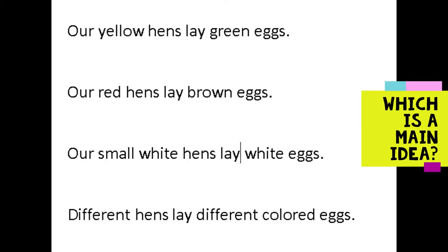So let's end today with a little practice. Here are four statements — which one would be a main idea statement? Our yellow hens lay green eggs; our red hens lay brown eggs; our small white hens lay white eggs; or different hens lay different colored eggs.